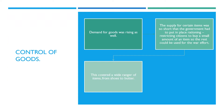Control of goods. Demand for goods was rising as well. The supply for certain items was so short that the government had to put in place rationing — restricting citizens to buy a small amount of an item so the rest could be used for the war effort. This covered a wide range of items from shoes to butter, so people were limited in what they could buy and use. That way those supplies could be saved and kept to support the fighting.